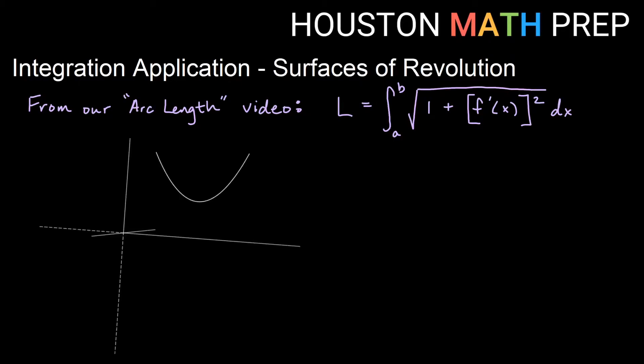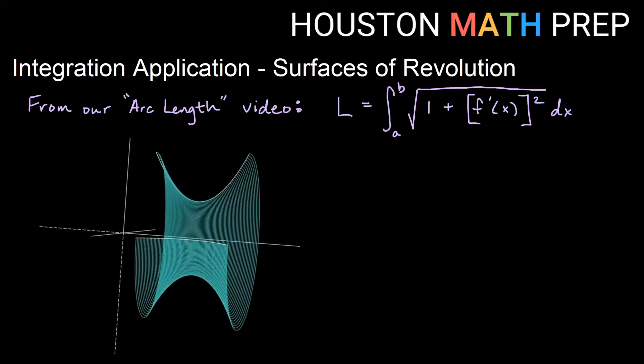If we look at a function in the plane, some sort of a curve, and we revolve it about an axis, just the surface, so we're not actually creating a solid object using the region between the curve and the axis, but just revolving the curve itself, that's going to trace out a nice surface for us here.